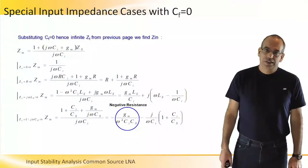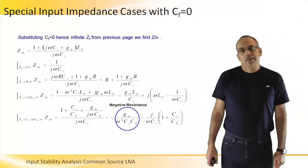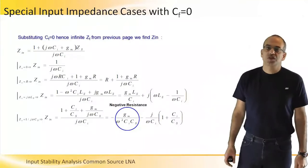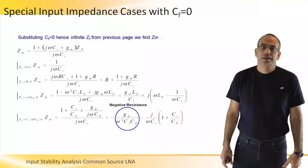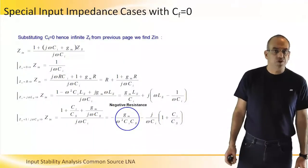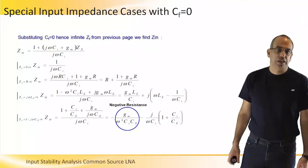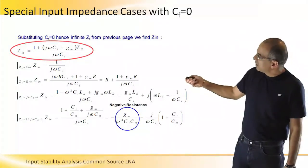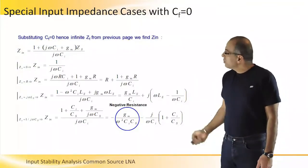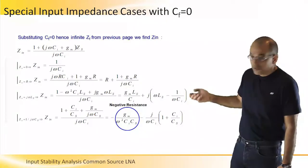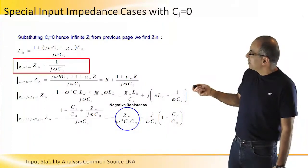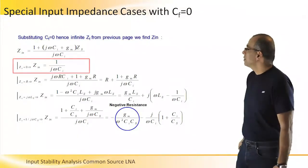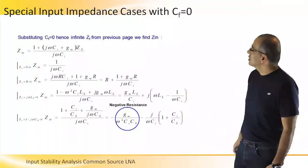Before continuing with the stability analysis, we can go back to the case where C_feedback, or CGD for the CMOS transistor, equals zero, to learn some properties from the expression we just developed for ZIN. If we assume CF equals zero, ZIN simplifies to the expression shown here. The first case is the ideal common source: setting ZS equal to zero gives the well-known input impedance of capacitor CI, or CGS in the CMOS case.